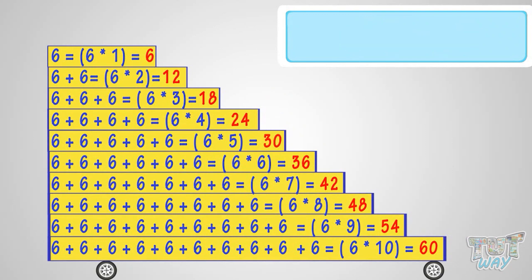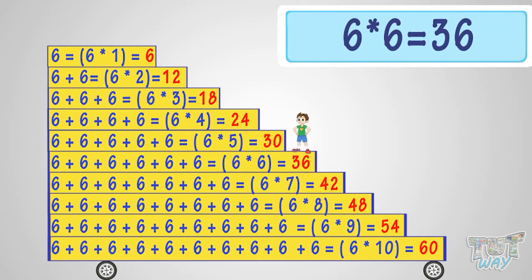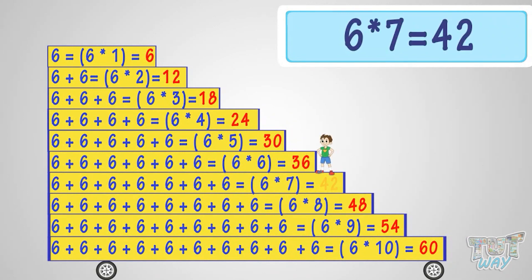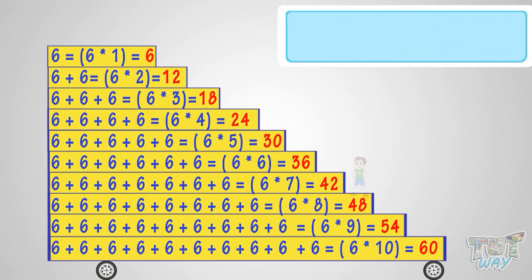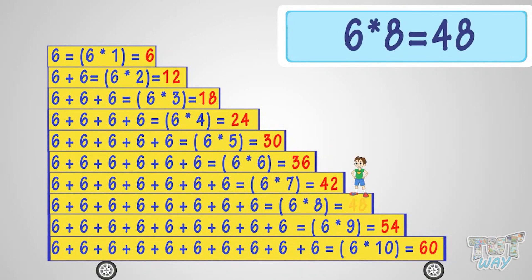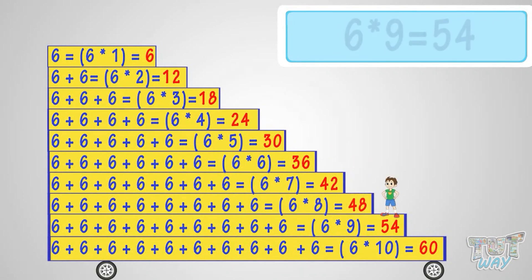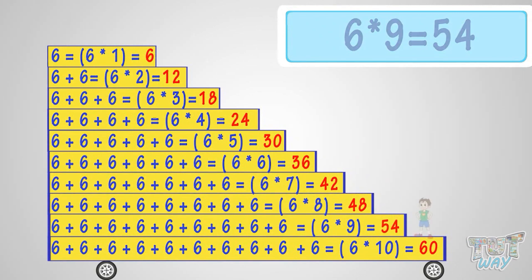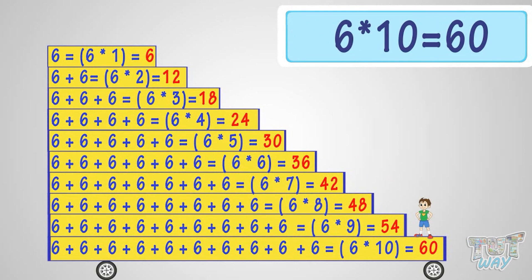Six times six is thirty-six. Six times seven is forty-two. Six times eight is forty-eight. Six times nine is fifty-four. Six times ten is sixty.